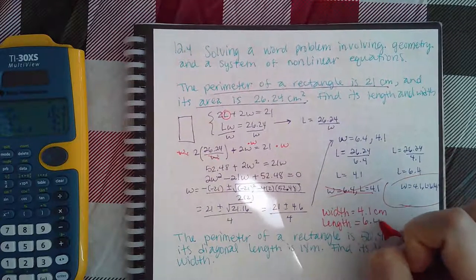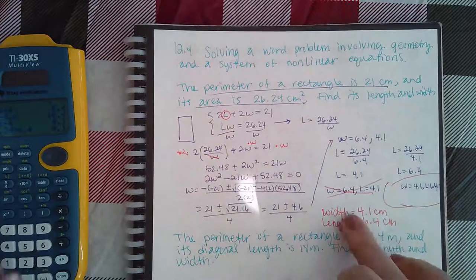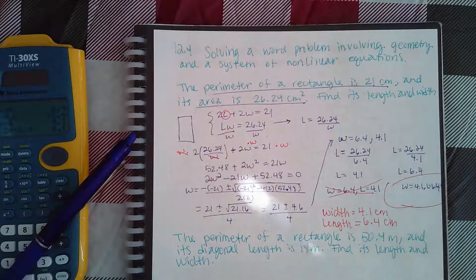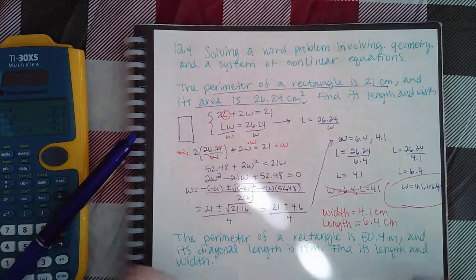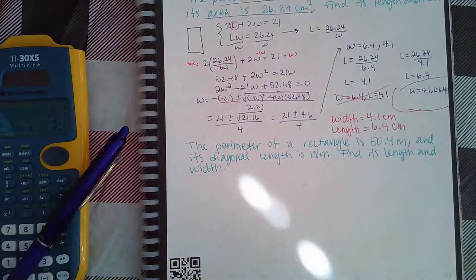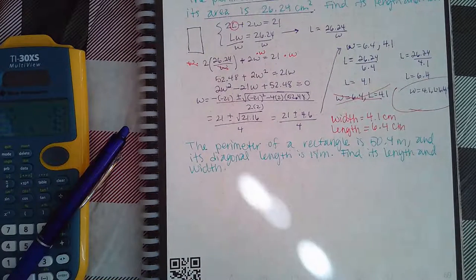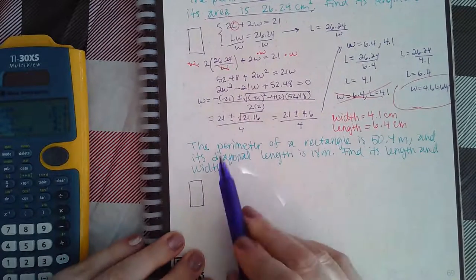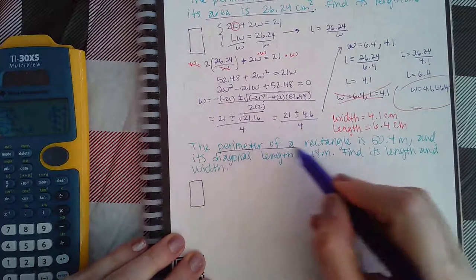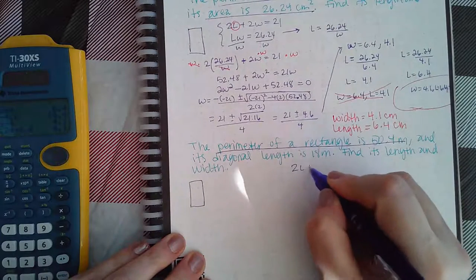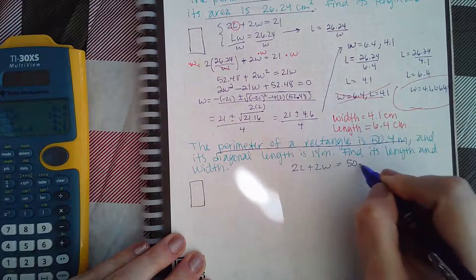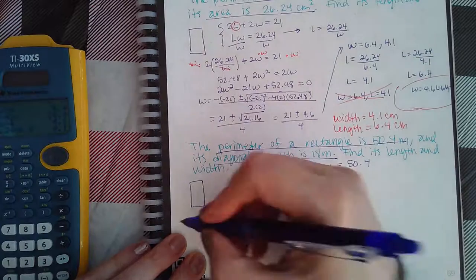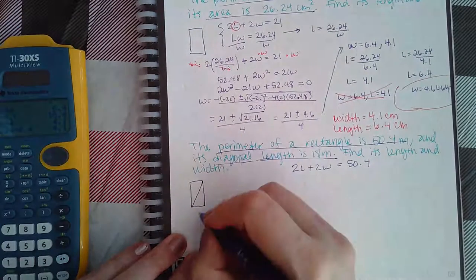Pay special attention to where the word length is and where the word width is, because your larger number is going to go in for length and your smaller number for width. Now we have another version where they give you a different kind of scenario. I'm going to draw my little rectangle, and it says the perimeter of the rectangle is this, so I still have that same equation: 2L plus 2W equals 50.4.